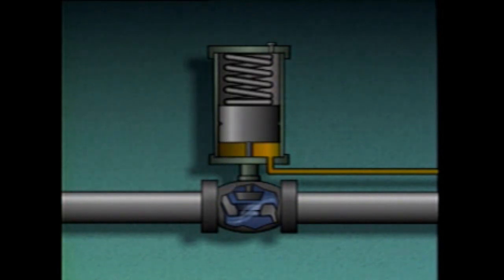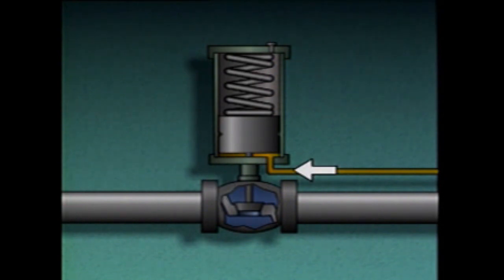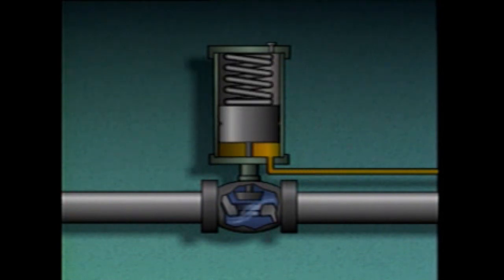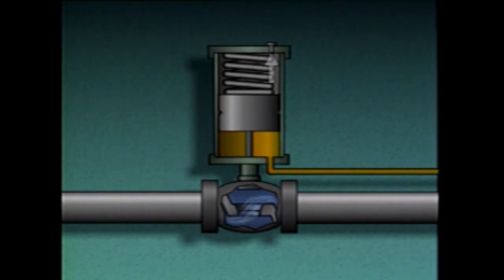In this example, when there's no fluid pressure against the piston, the spring keeps the piston at its lowest position in the cylinder and the valve is closed. When fluid flows through the port into the cylinder, the piston moves upward. As it moves, the piston compresses the spring and opens the valve. Any air in the cylinder above the piston is exhausted through the vent. When the flow of fluid stops, the fluid pressure and spring hold the piston and the valve at their new positions.